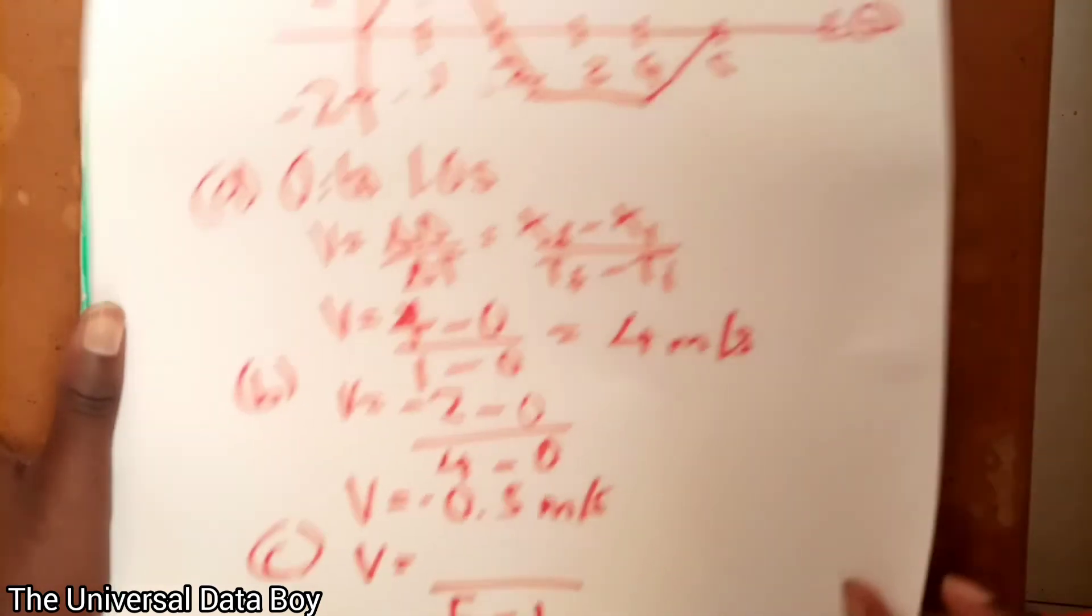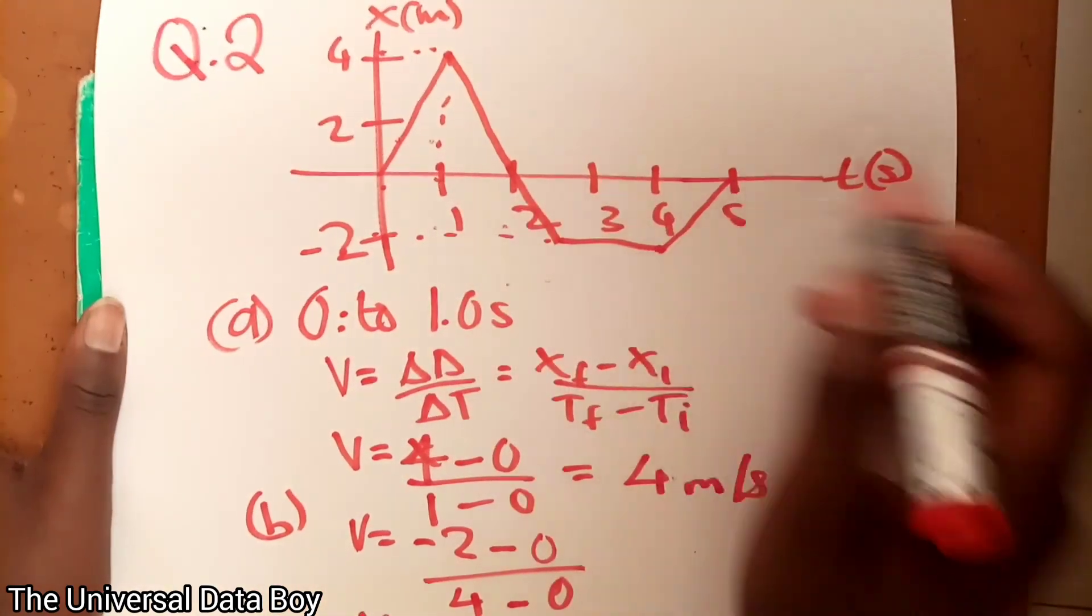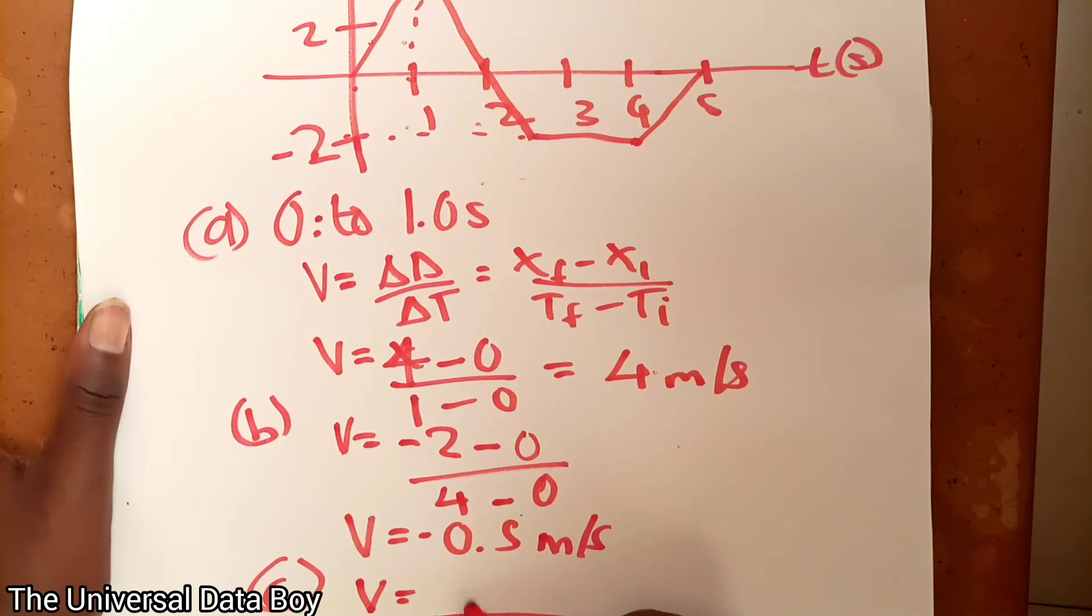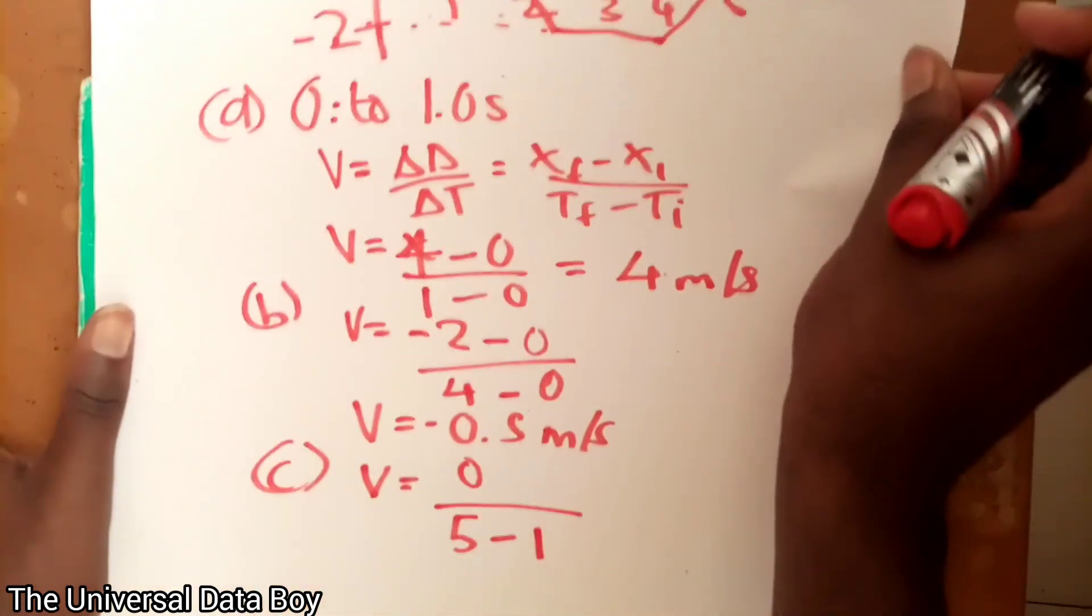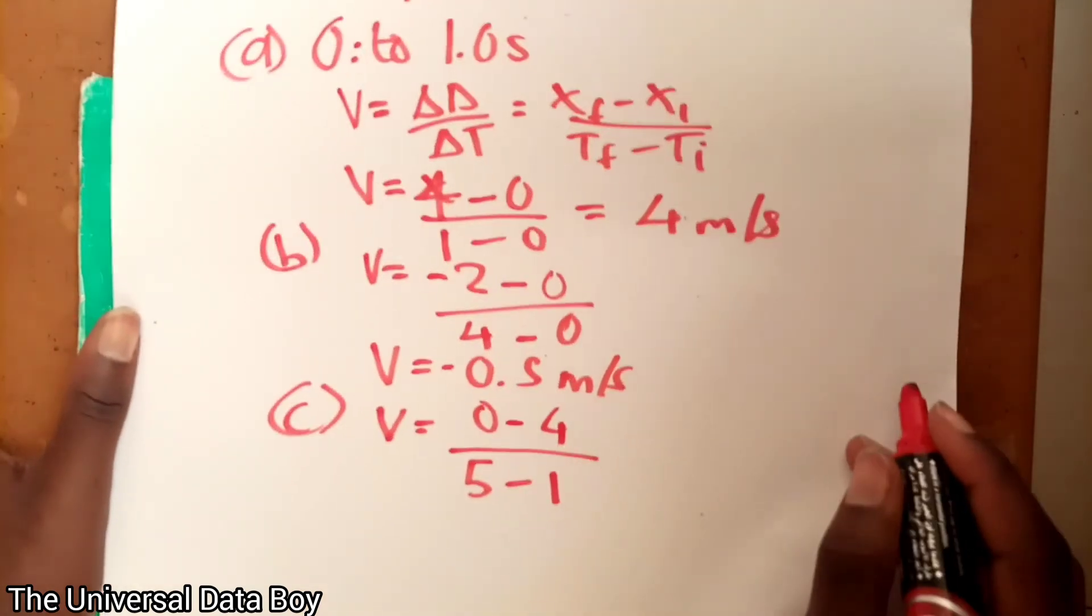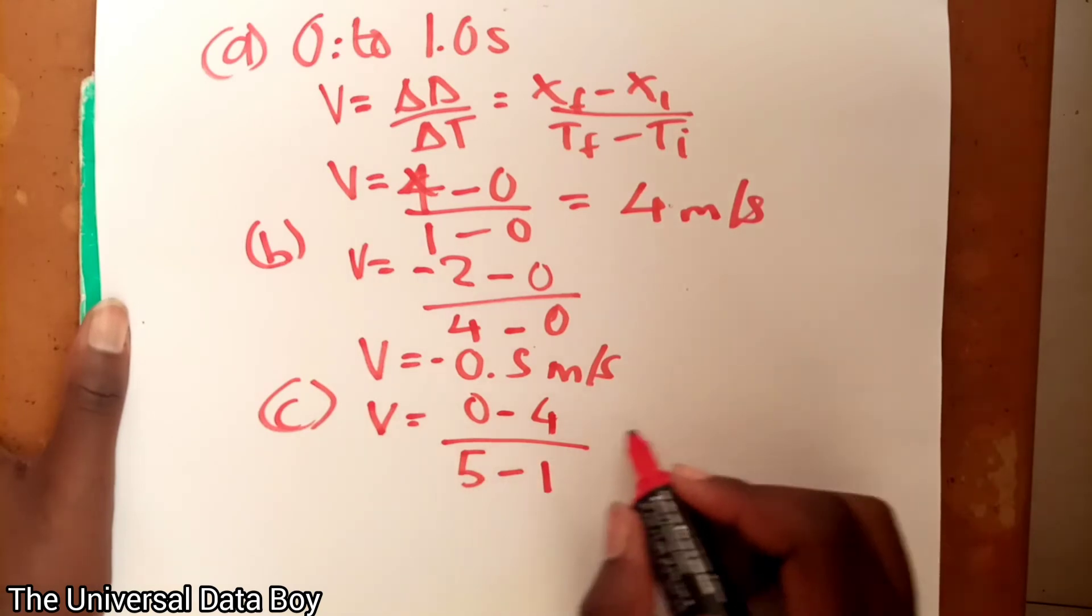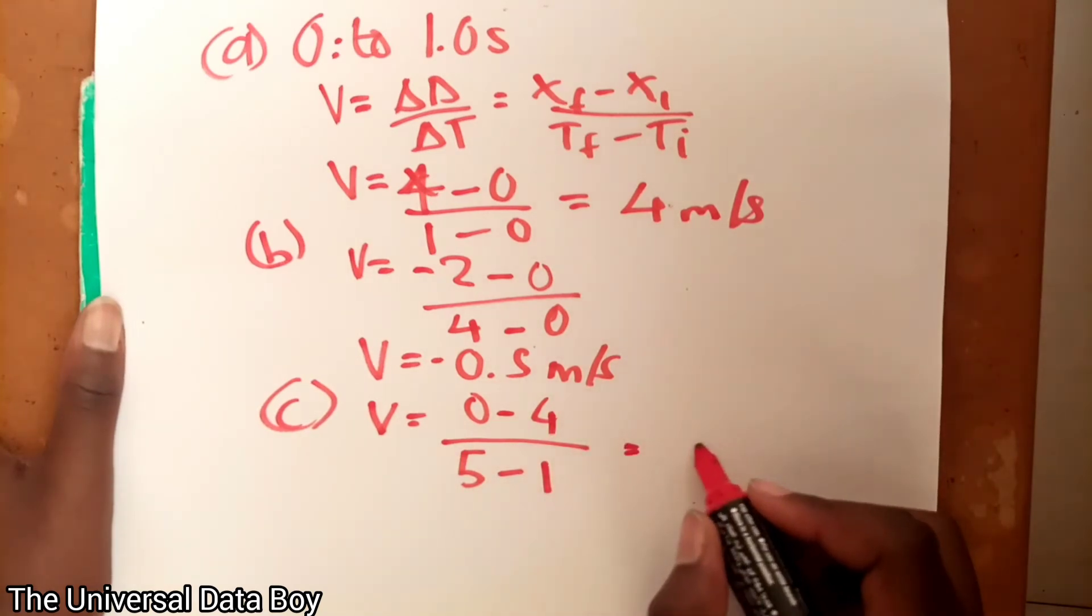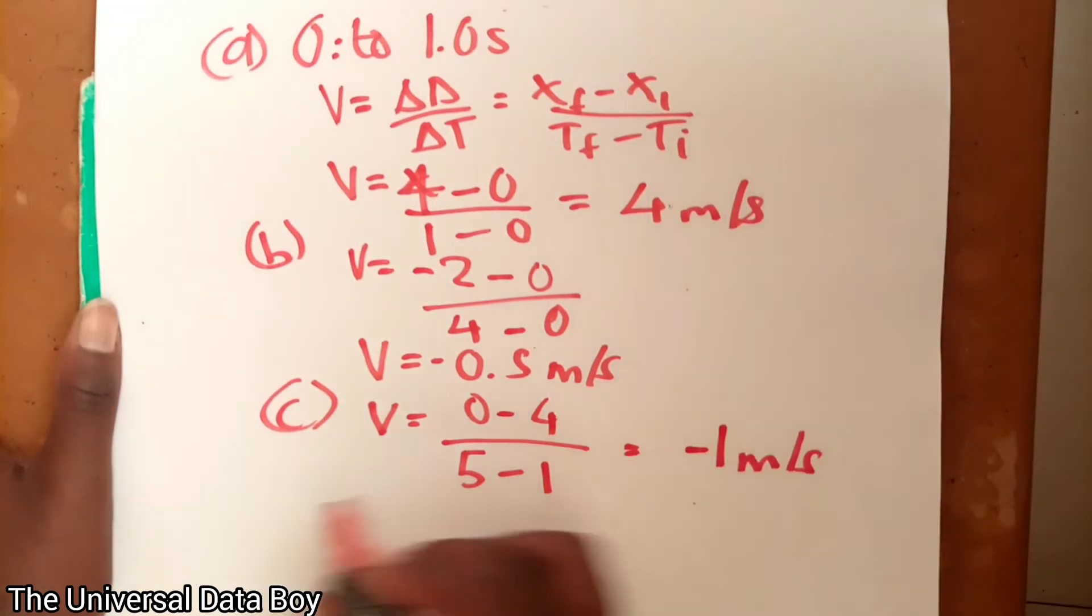Then our distance, the distance at 5 is the final, at final I have got 0. Then at 1 we have got 4 as our distance. So it's 0 minus 4. Then the final answer will be, here we are going to have a 4, so we are going to have negative 1 meters per second. Then we go to d